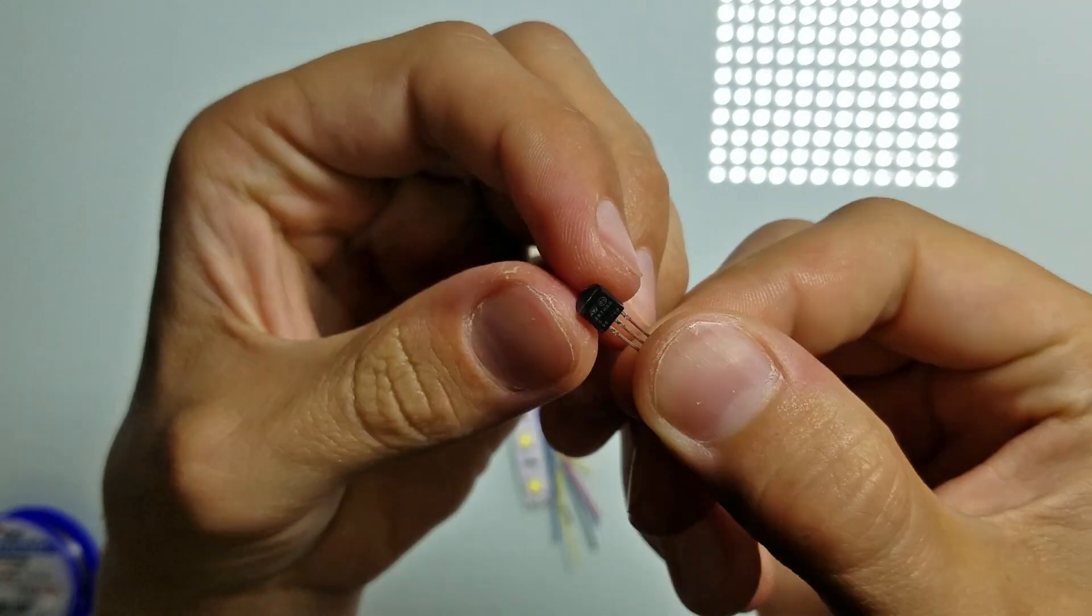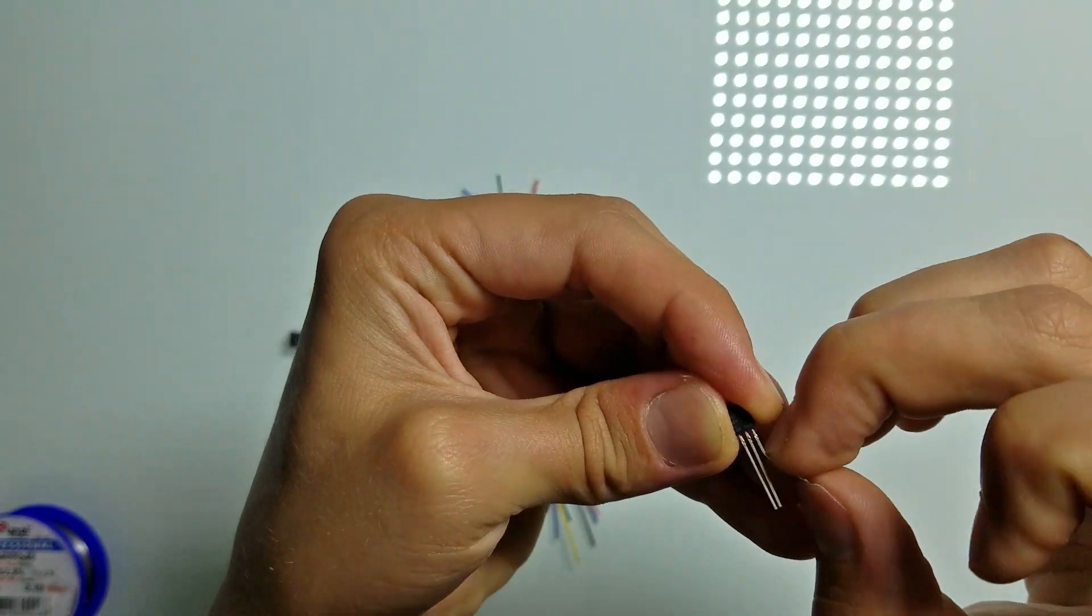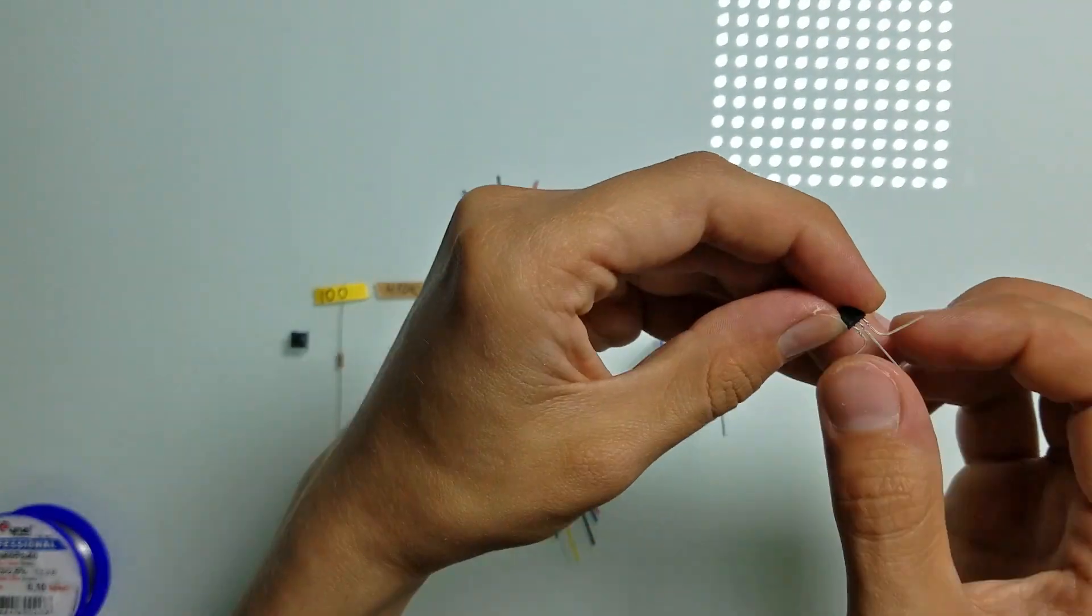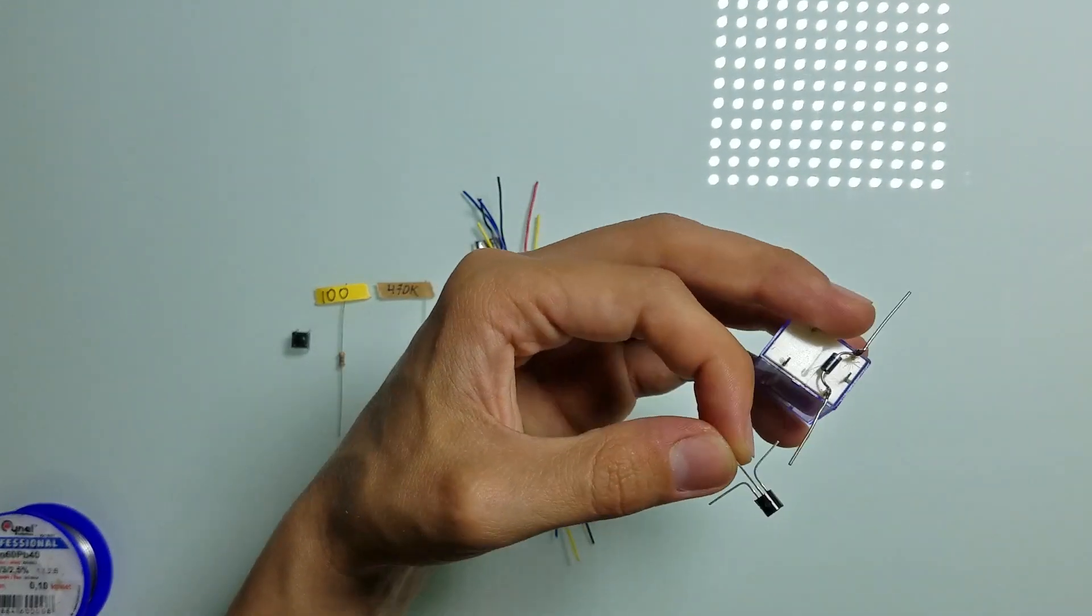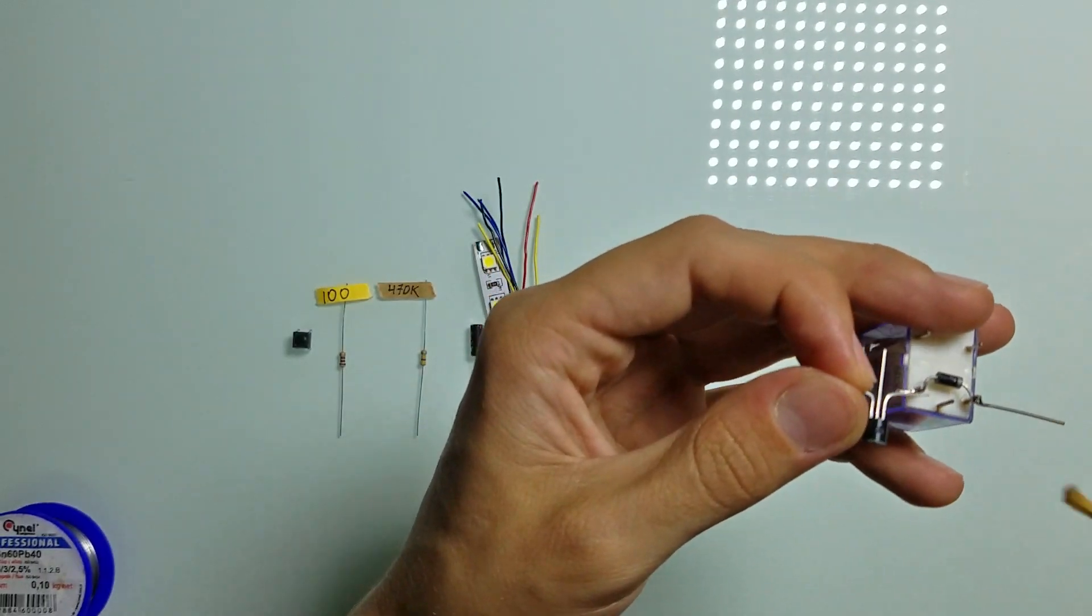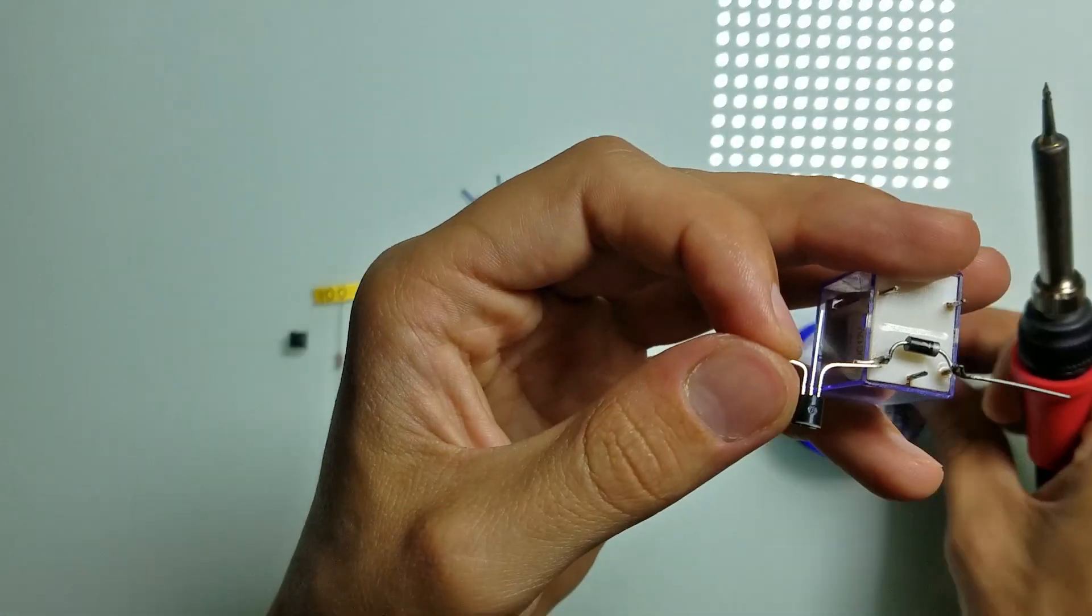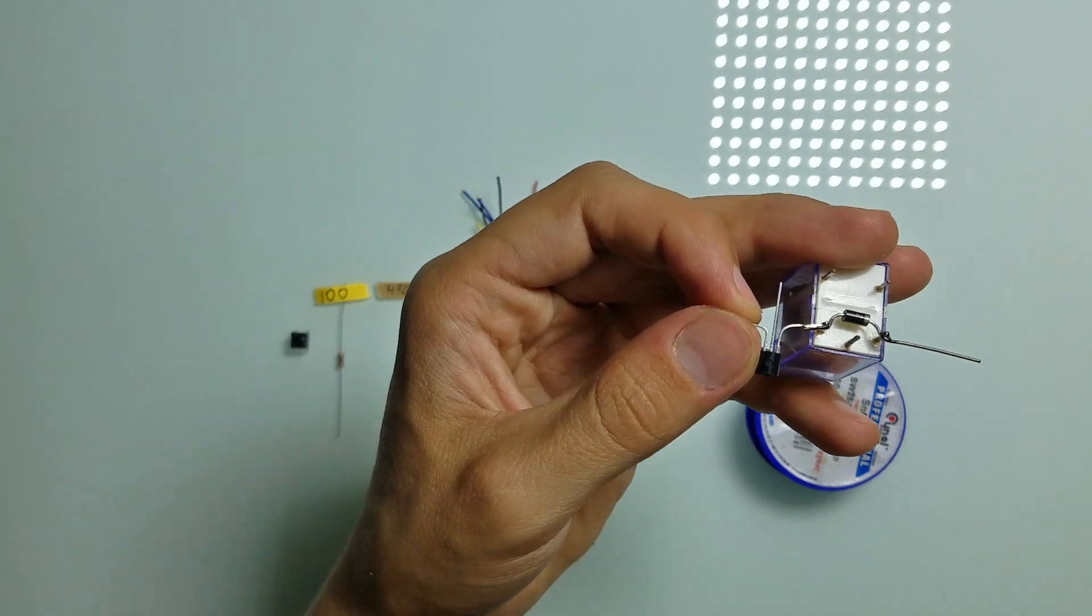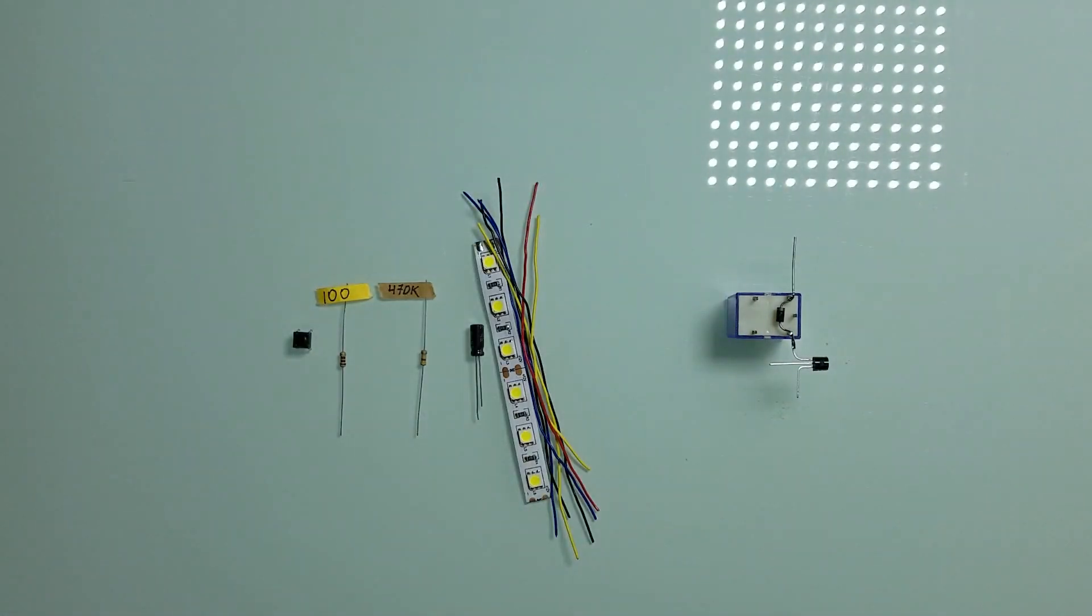Now let's solder the drain lead of the MOSFET to the anode lead of the diode. After it's done,